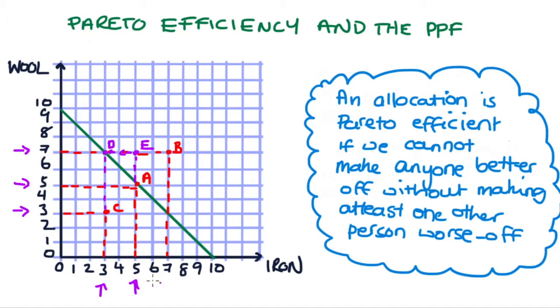So let's just go back to our definition of Pareto efficiency. We said that an allocation is Pareto efficient if we can't make anyone better off without making at least one other person worse off. And so in this way, in this particular example, we see A is efficient because we can't increase the amount of wool that we're producing without decreasing the amount of iron.